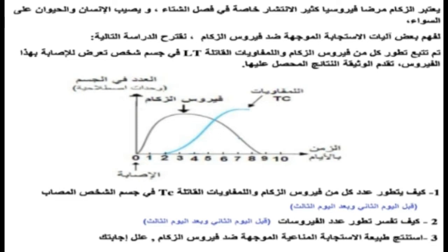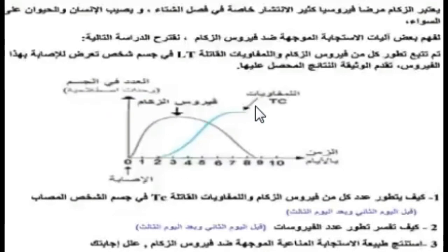نجيب على هذا التمرين المقترح. هذا الشخص أصيب بفيروس الزكام. المنحنى الأول يمثل عدد اللنفويات TC - اللنفويات T القاتلة Cytotoxic. والمنحنى الثاني يمثل عدد فيروس الزكام أو عدد اللنفويات T Cytotoxic السمية القاتلة في الجسم.